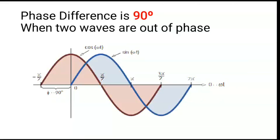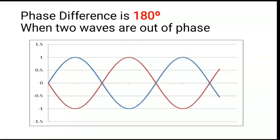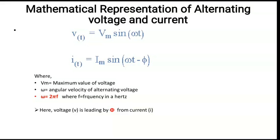Here phi is the phase angle, representing the phase difference. The equation shows that voltage v = Vm sin(ωt) and current i = Im sin(ωt − φ), meaning current is lagging — voltage is leading by angle phi from current. Vm is the maximum value of voltage and ω is the angular velocity of the alternating voltage. The same concept applies for current as well.